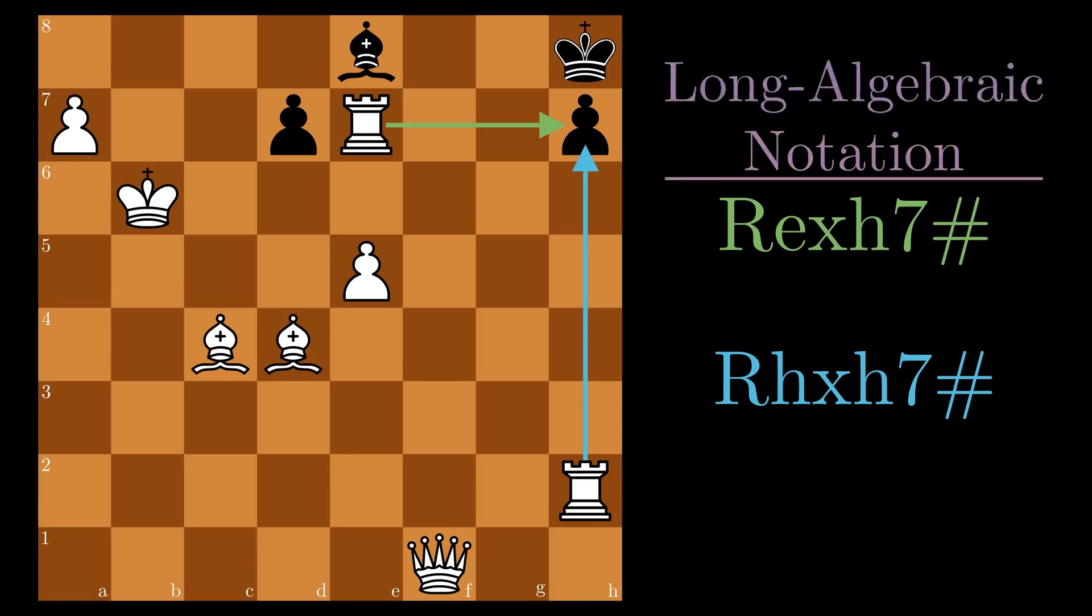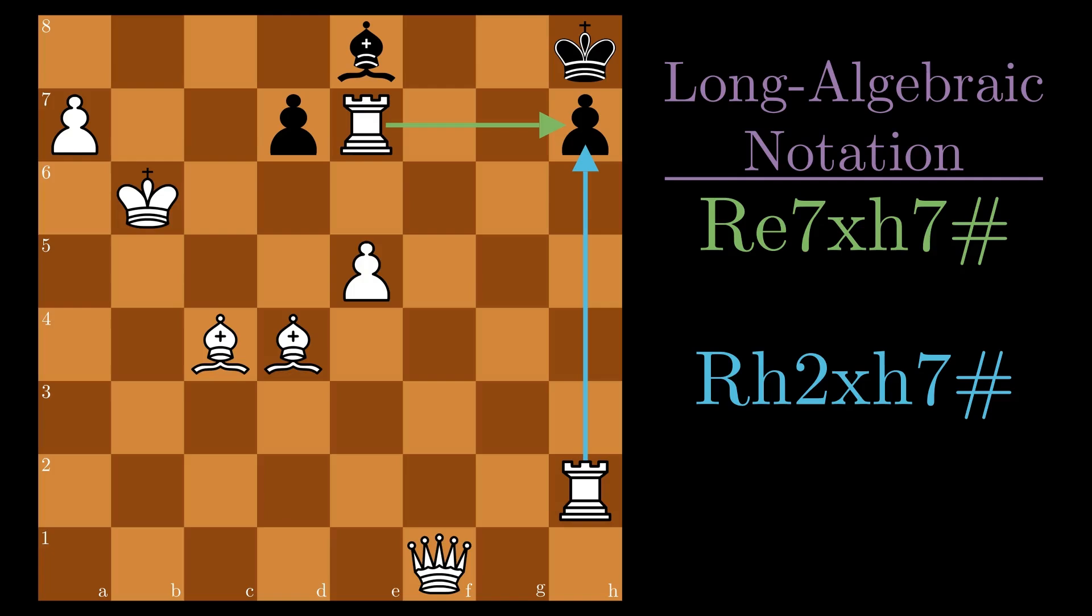To get consistent notation for every move, I used enhanced, or long algebraic notation, where the origin square is always specified. So the two moves would be written as rook e7 captures h7, or rook h2 captures h7.